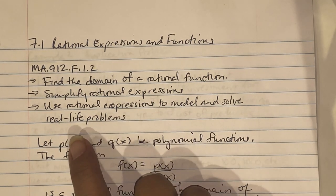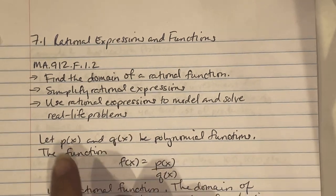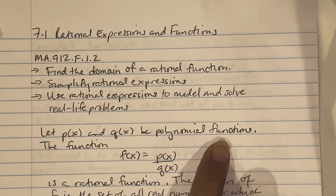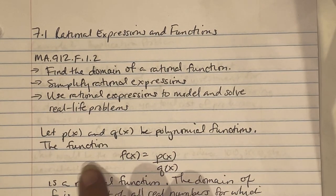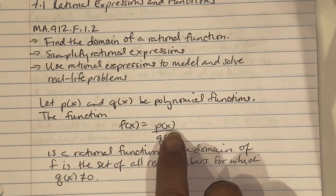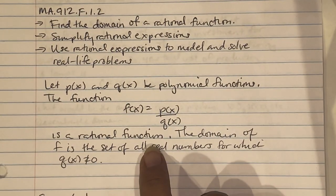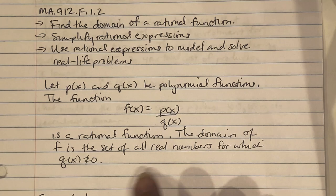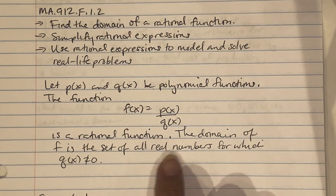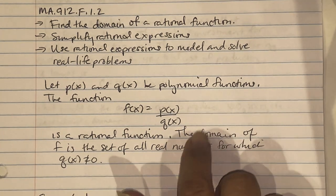Let P of x and Q of x be polynomial functions so that f of x equals P of x over Q of x is a rational function. The domain of f is the set of all real numbers for which Q of x does not equal 0, meaning the denominator cannot be 0.